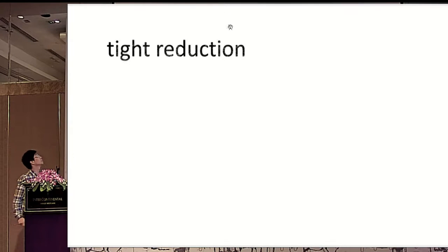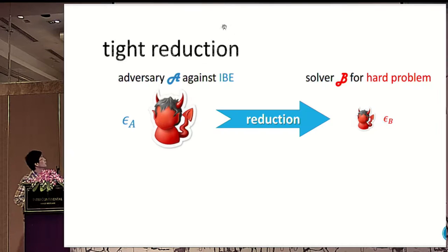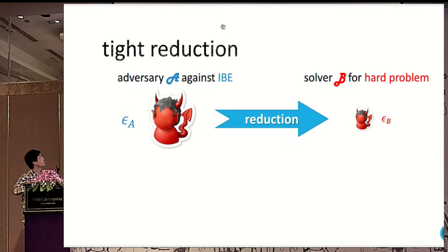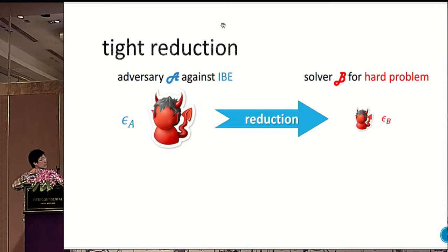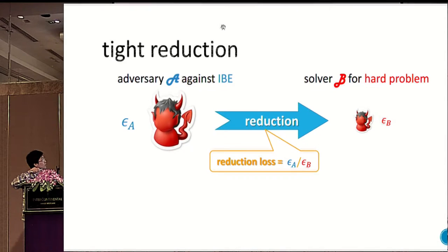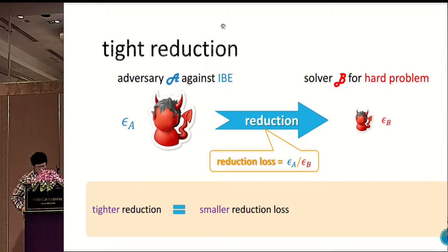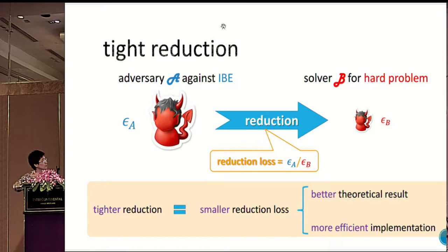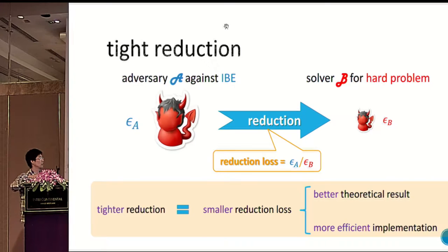The second term is Tight Reduction. In order to prove security of an IBE scheme, we always want to construct a solver for a hard problem from an adversary against the IBE scheme. But the reduction may have some loss — a large adversary versus a small one, where small means stronger. The title means smaller reduction loss, which means better theoretical results and may have some positive impact on implementation.